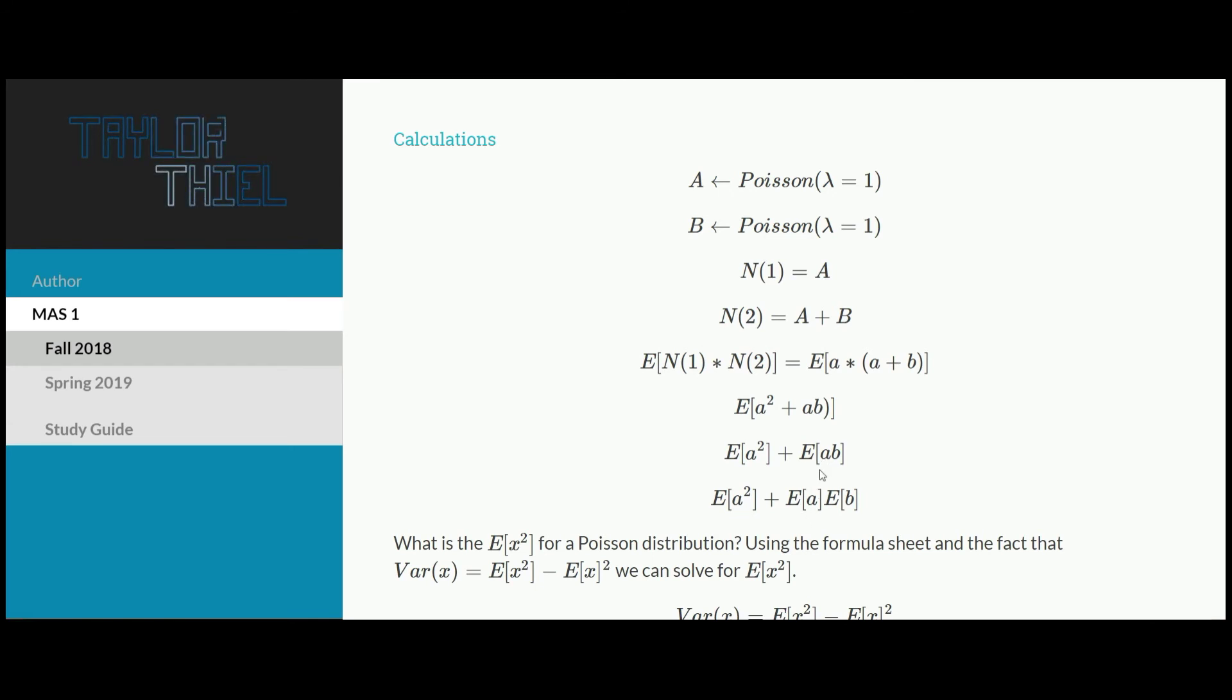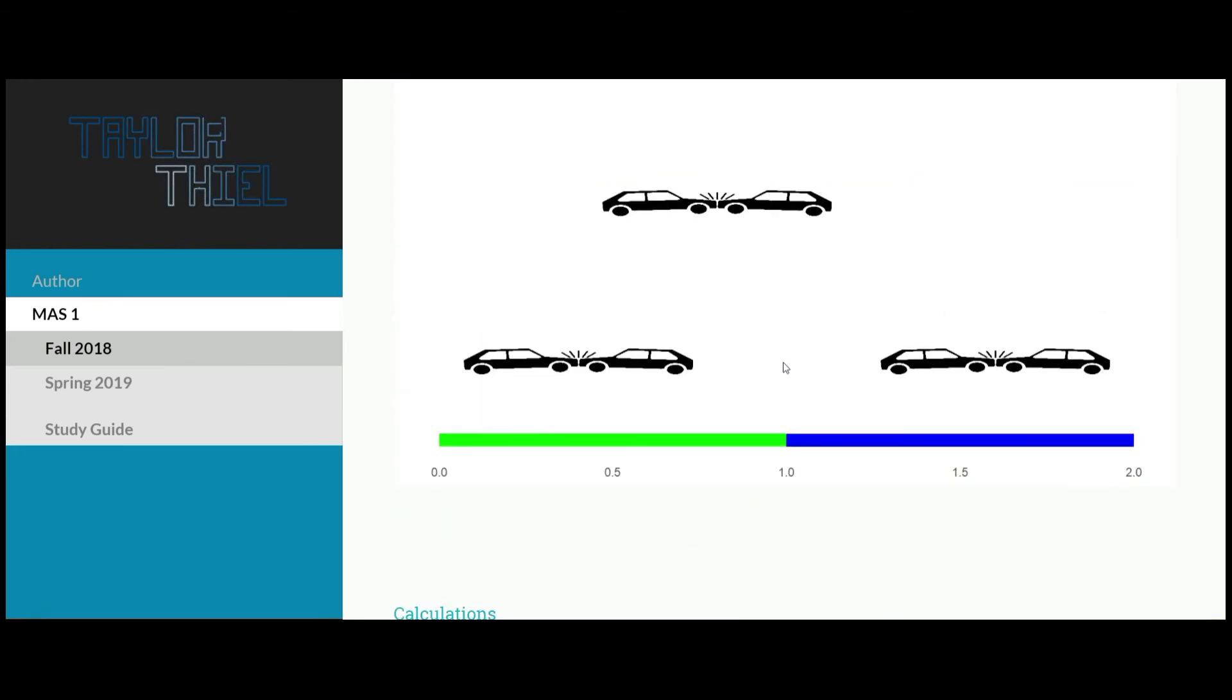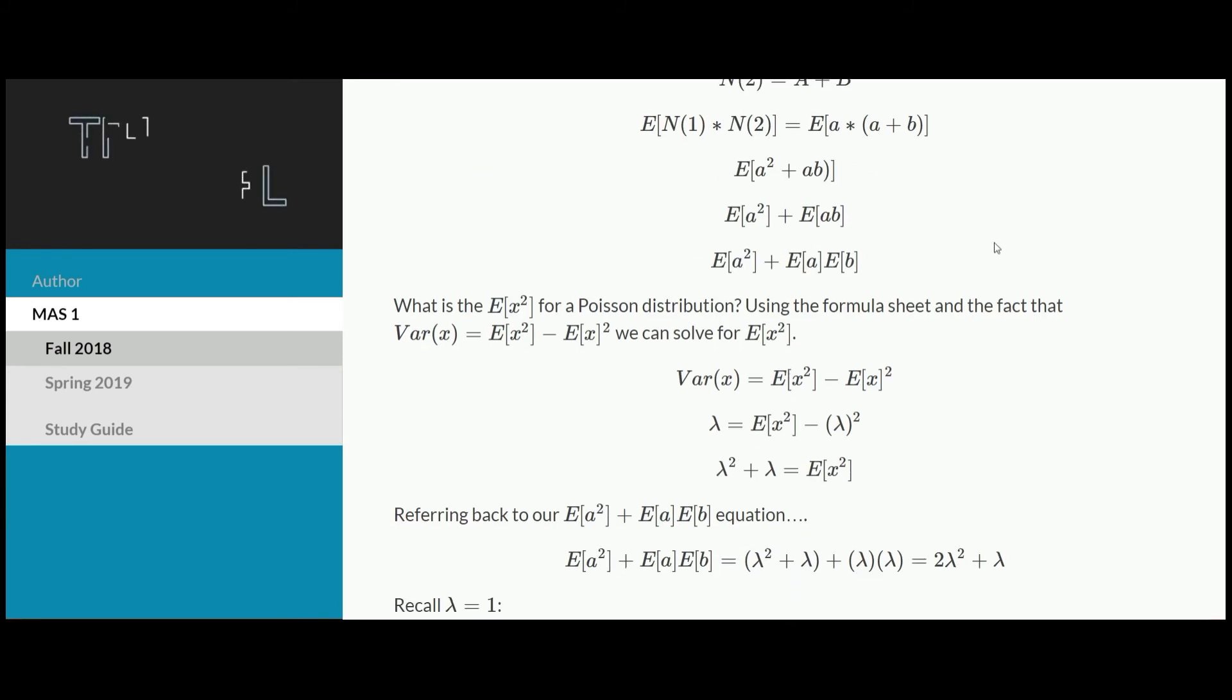What we can do is notice that A and B are two separate Poisson distributions. These are independent samples. The reason we know this is because of that memoryless property. If we scroll back up, how many car crashes happen in green versus blue? Those are totally independent due to the memoryless property. That's why we can go from taking the expected value of AB and changing that to the expected value of A times the expected value of B.